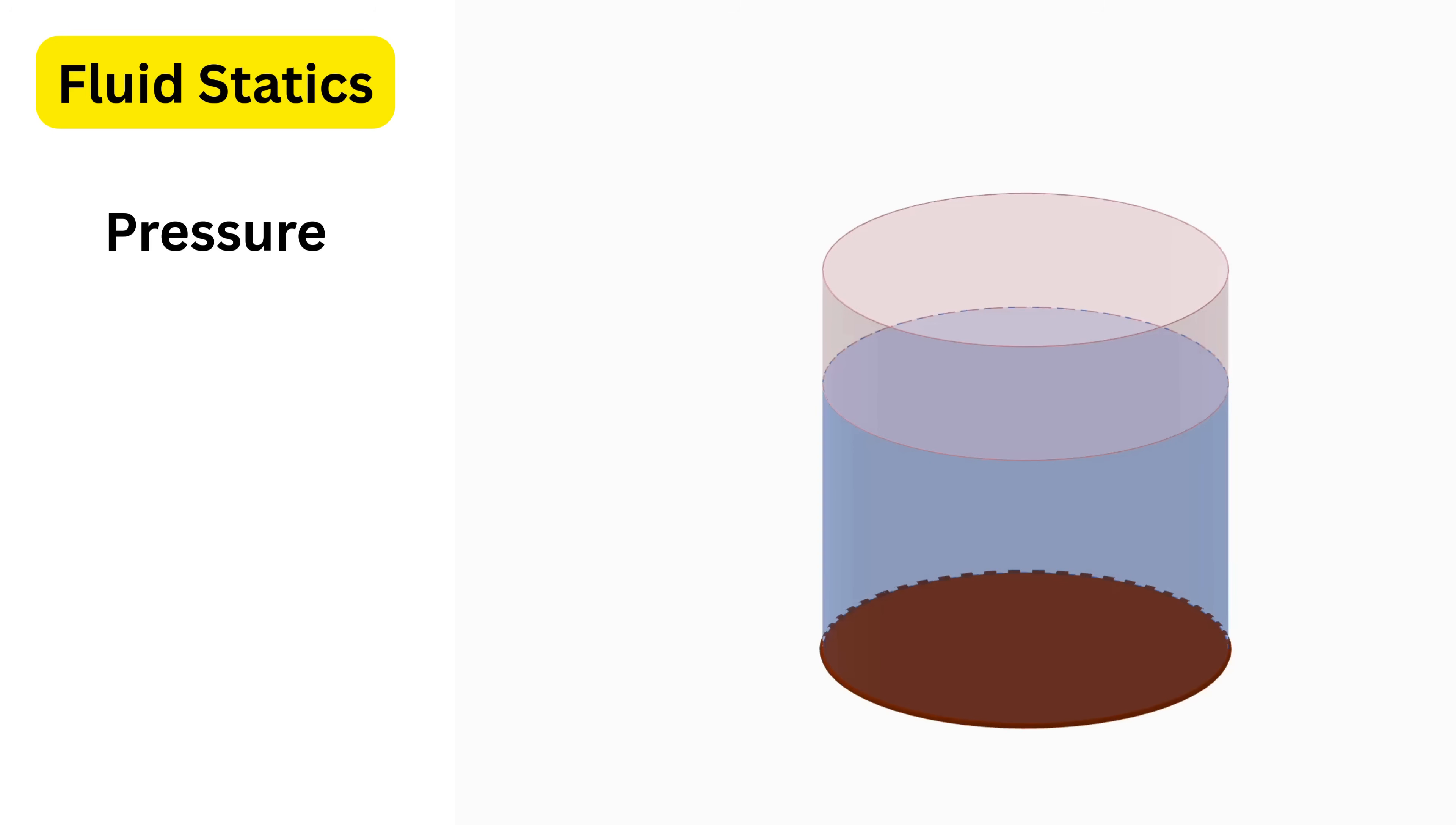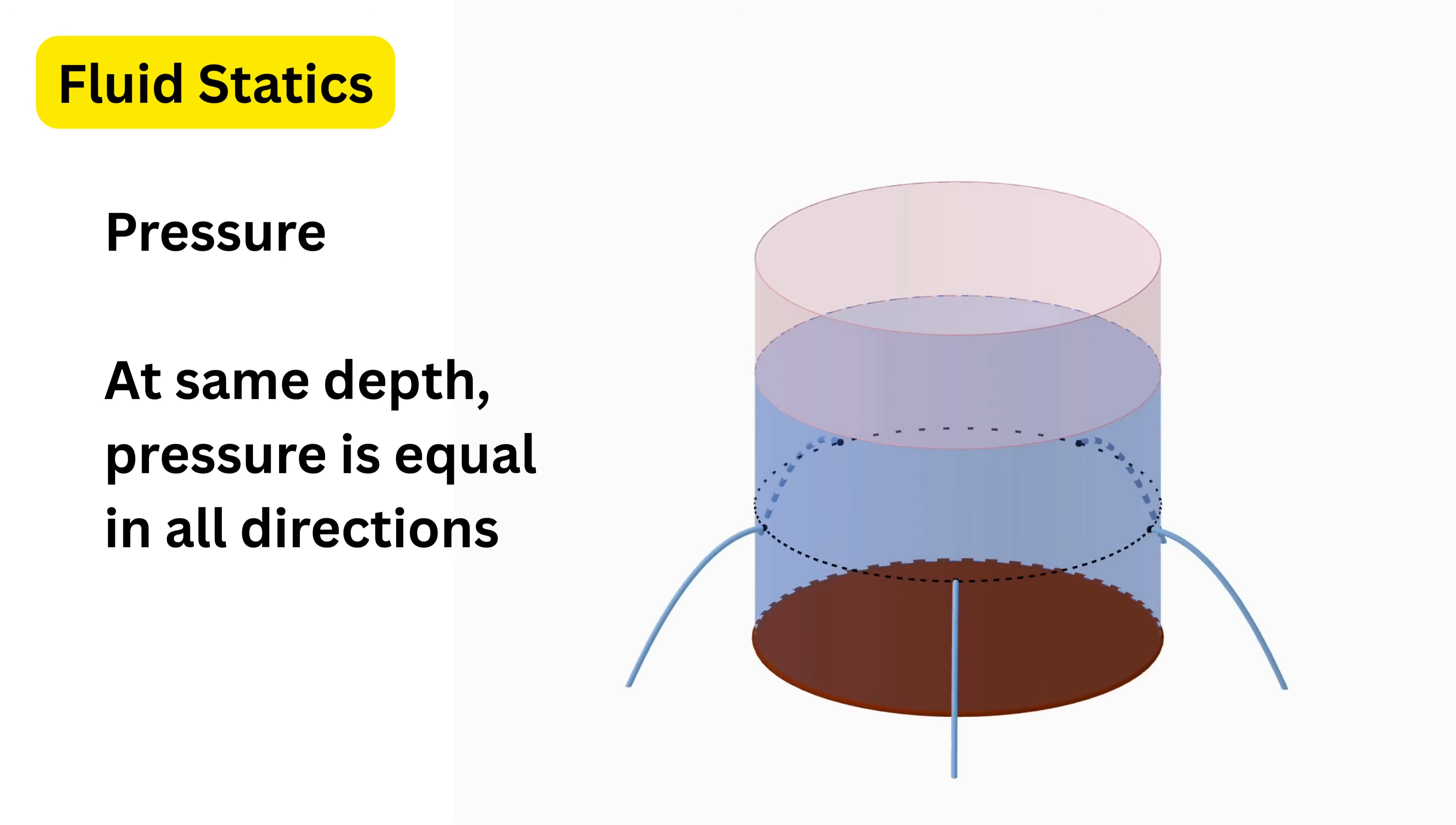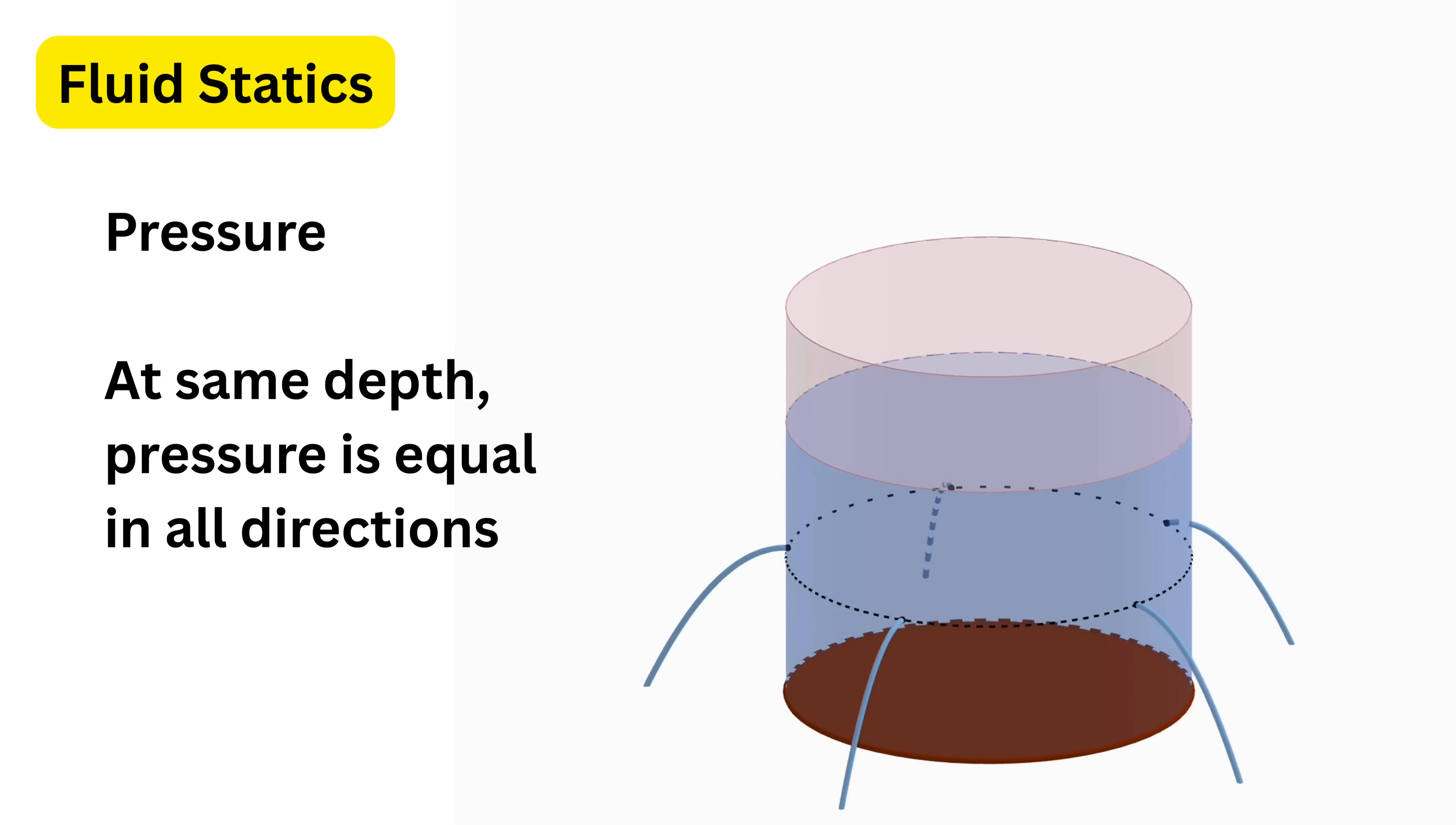Imagine a cylindrical plastic water bottle like this. If you use a needle to poke five holes at the exact same height around the circumference of the bottle, the water won't just leak out of one side. It will spray out of every hole with the exact same force. This shows that at a specific depth, the pressure is identical in every horizontal direction.